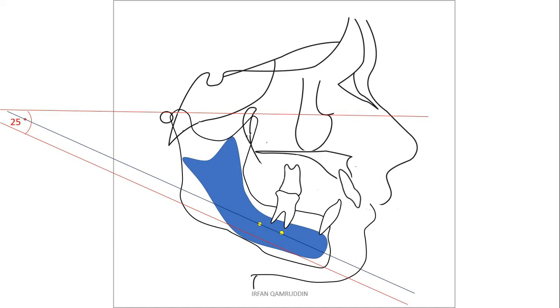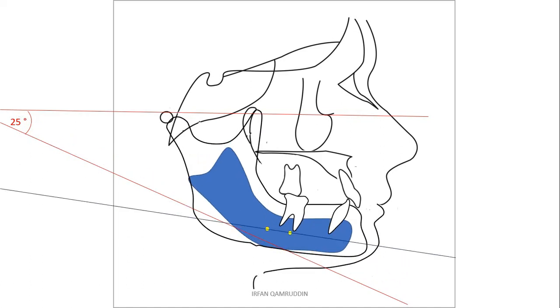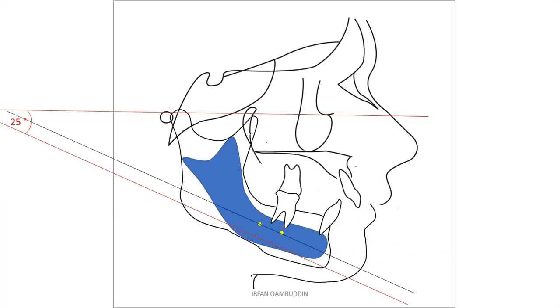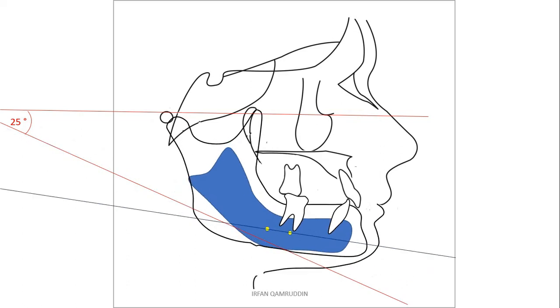Now when serial radiographs were taken, traced and superimposed, it was observed by George that along with displacement of mandible in downward and forward direction, there is also rotation of the core of the mandible in anti-clockwise direction. See it again: mandible is moving downward and forward and along with that it is also rotated upward and forward in counterclockwise direction.